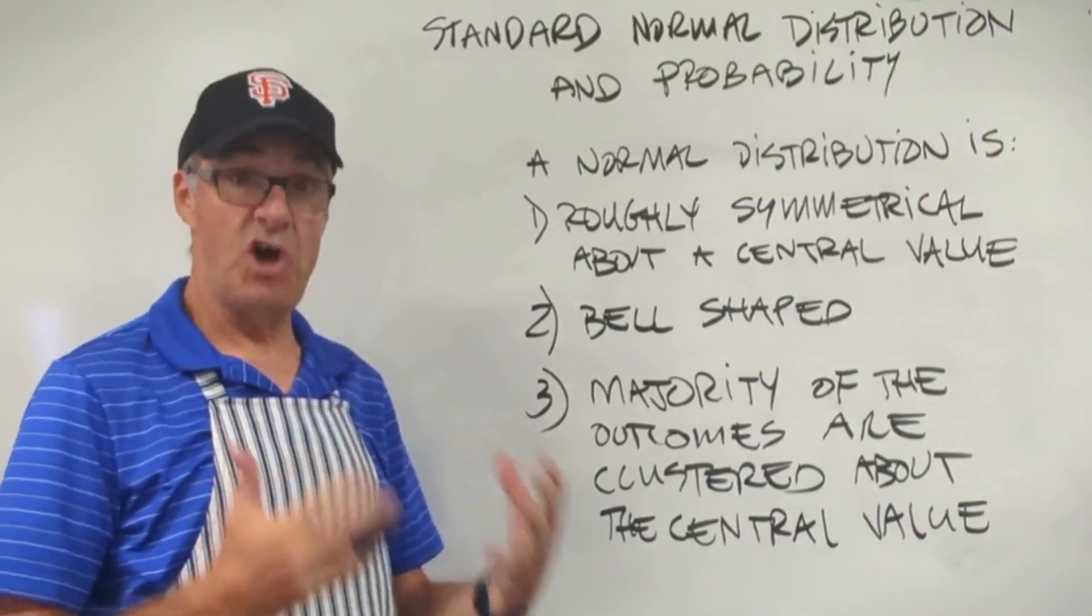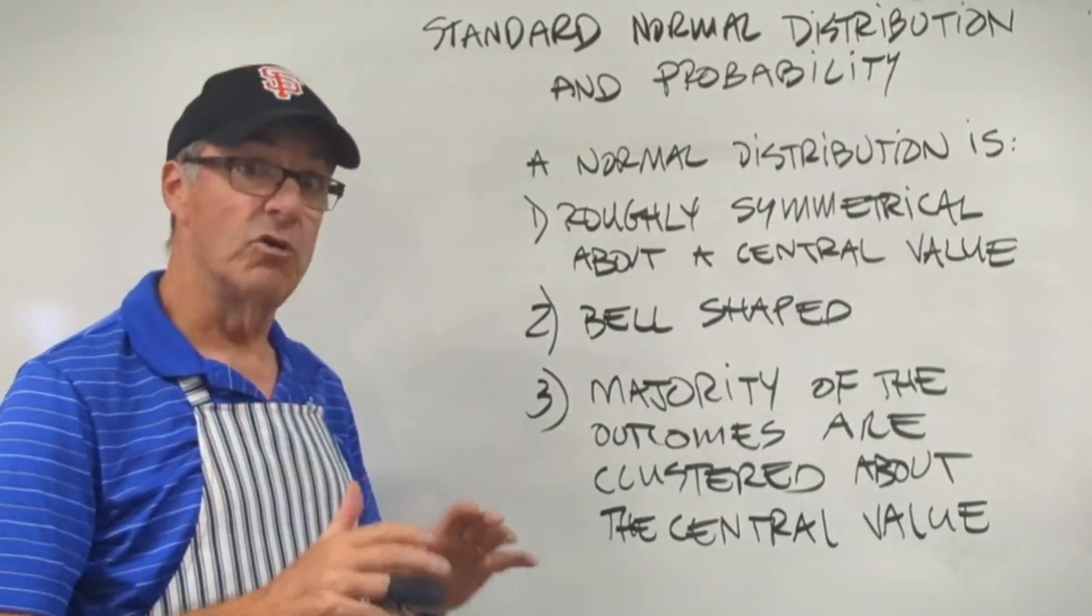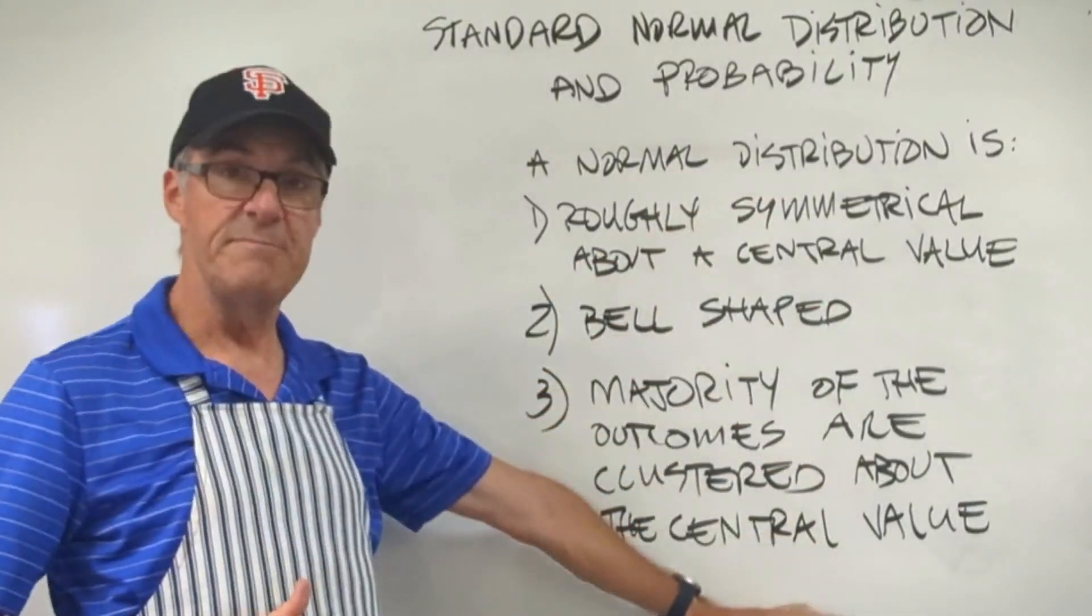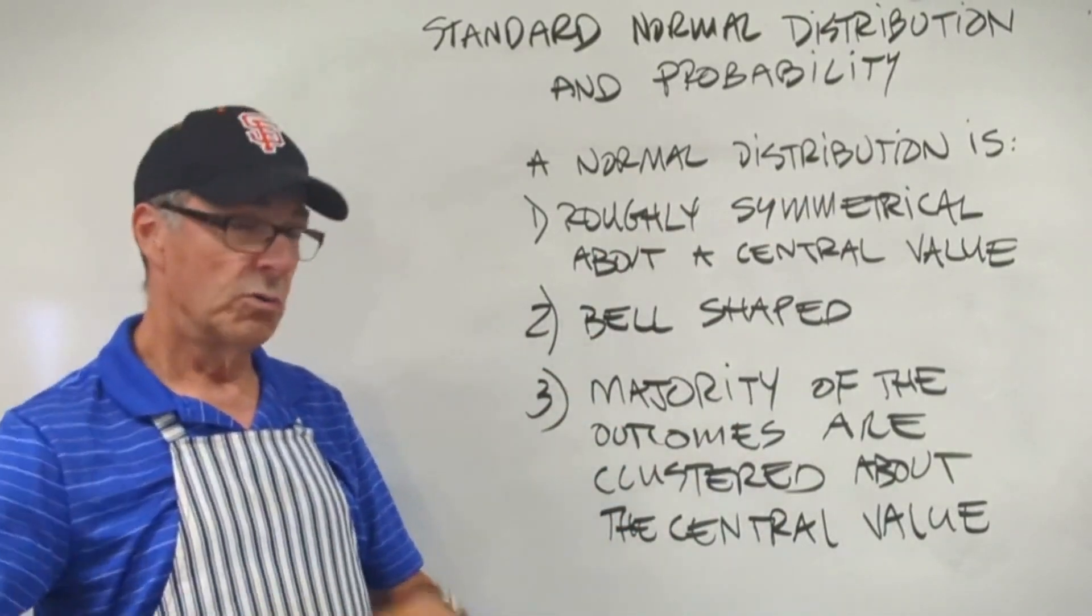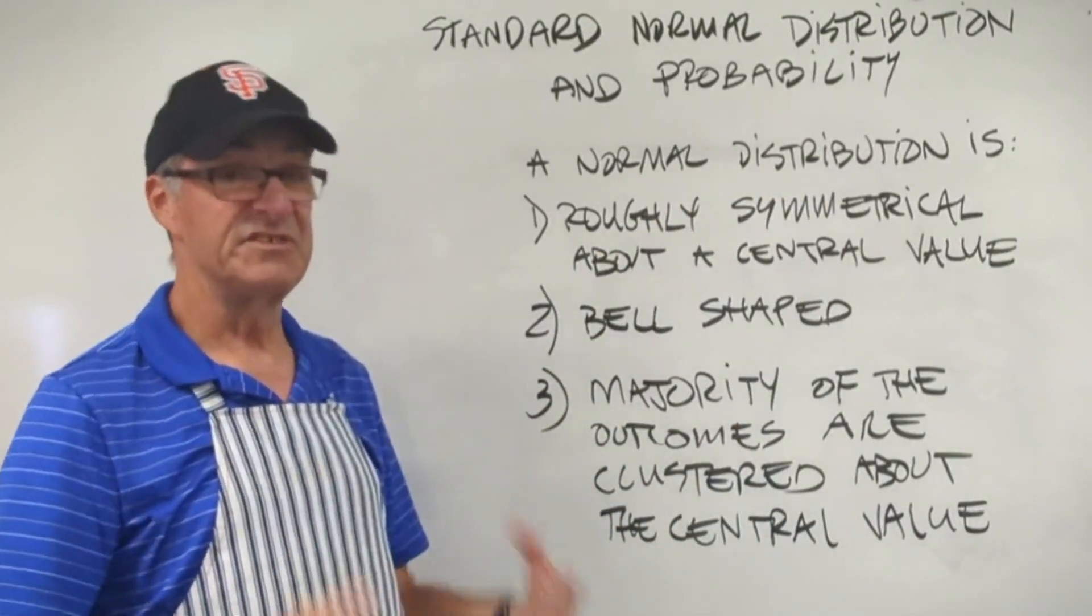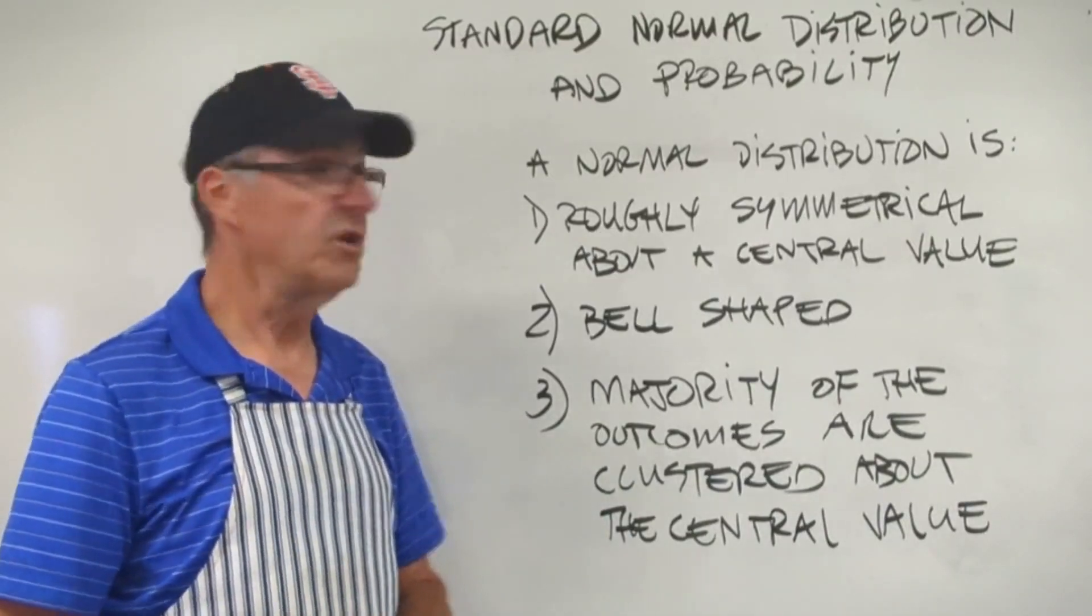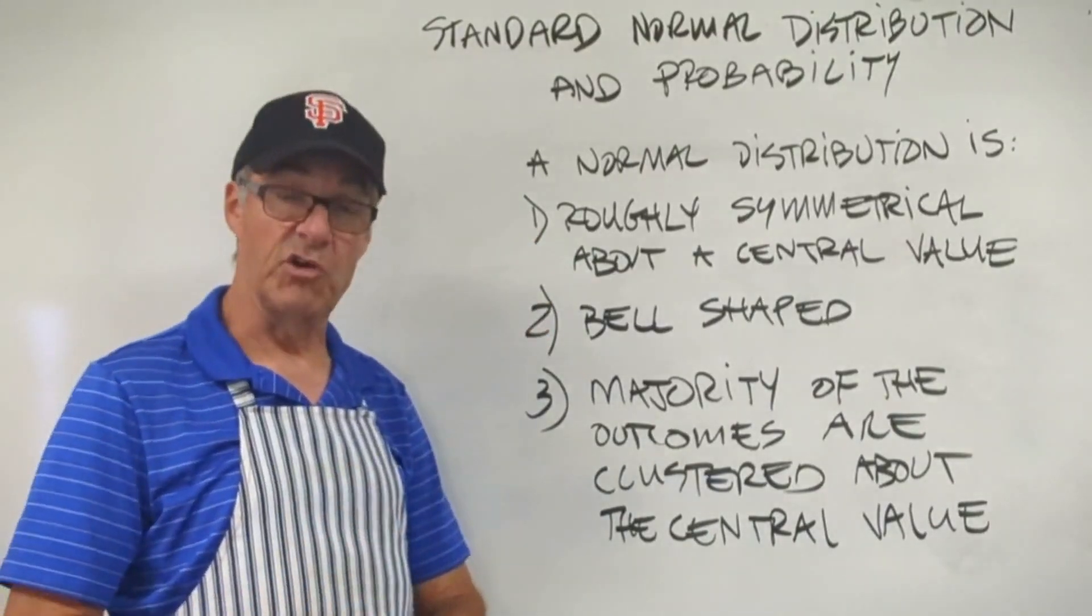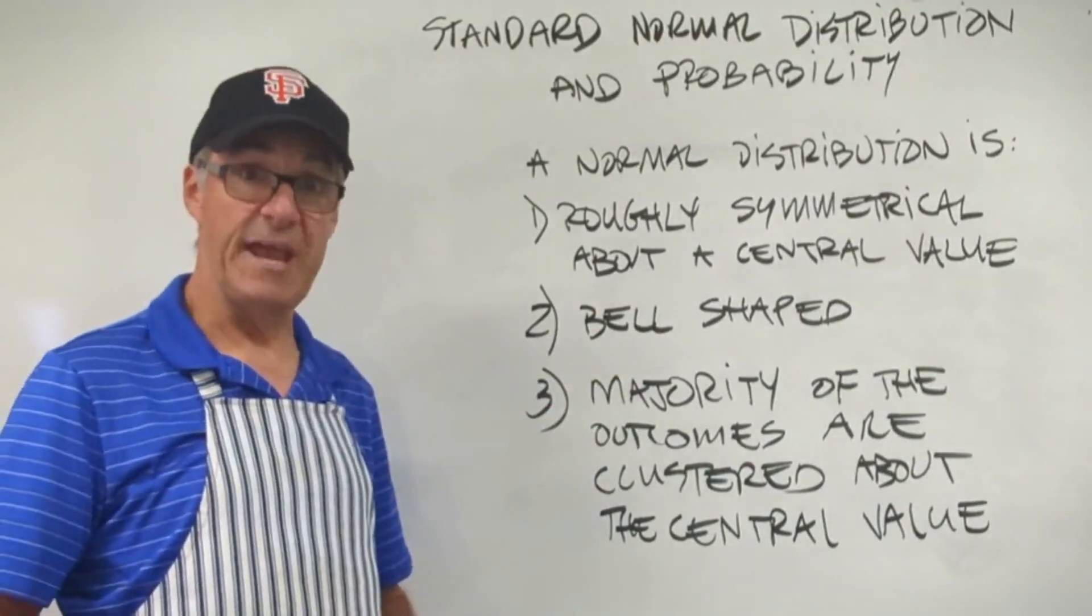So let's talk about this thing called a normal distribution. It has a graphical representation, which we're going to get to on the next board. But first, we want to talk about three main characteristics of the normal distribution. A normal distribution is roughly symmetrical around a central value. It's bell-shaped.